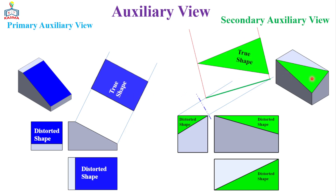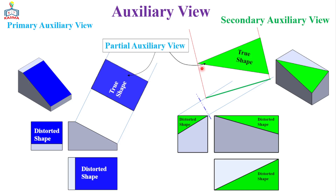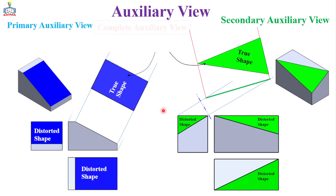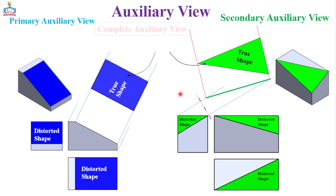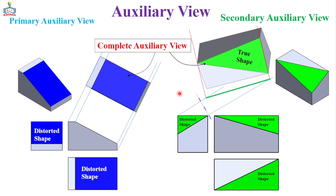Based on the projected surface, we can divide the auxiliary view into a partial auxiliary view and a complete auxiliary view. In the case of a partial auxiliary view, we can project only the slanted surface. In the complete auxiliary view, we can project all surfaces from the view of the slanted surface. In most cases, we use a partial auxiliary view instead of a complete auxiliary view.